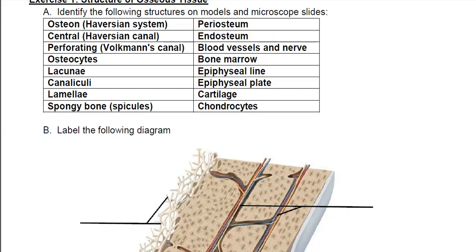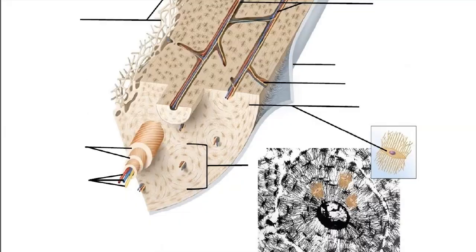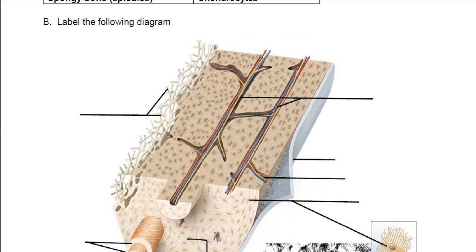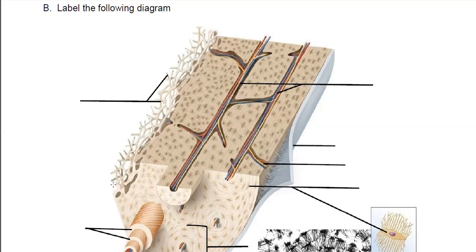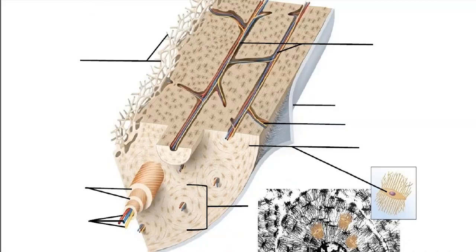Our first diagram is just a simple generic osteon diagram. Hopefully you've done the lecture by now and know what an osteon is to begin with, but we have to label the parts of it here. Starting on the very inside, there's a little piece of the bone that looks very different than the rest — this is the spongy bone. What you're seeing here are the spicules. The rest of it is the compact bone.